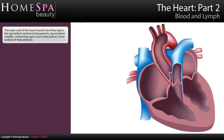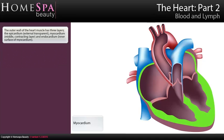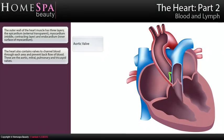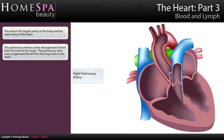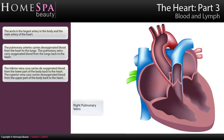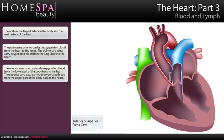The outer wall of the heart muscle has three layers: the epicardium (external, transparent), the myocardium (middle, contracting layer), and the endocardium (inner surface of myocardium). The heart also contains valves to channel blood through each area and prevent backflow — these are the aortic, mitral, pulmonary and tricuspid valves. The aorta is the largest artery in the body and the main artery of the heart. The pulmonary arteries carry deoxygenated blood from the heart to the lungs, while the pulmonary veins carry oxygenated blood from the lungs back to the heart. The inferior vena cava carries deoxygenated blood from the lower part of the body back to the heart, and the superior vena cava carries deoxygenated blood from the upper part of the body back to the heart.